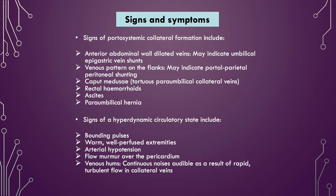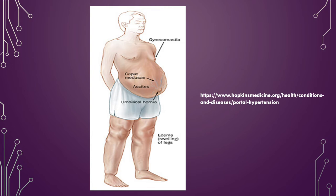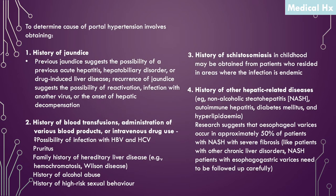This is a typical presentation of an underlying portal hypertension condition. To determine the causes of portal hypertension involves obtaining information on the history of jaundice, history of blood transfusion or administration of various blood products or intravenous drug use. A history of schistosomiasis in childhood may also be necessary in order to determine if the infection was endemic. A history of other hepatic-related diseases is also necessary.